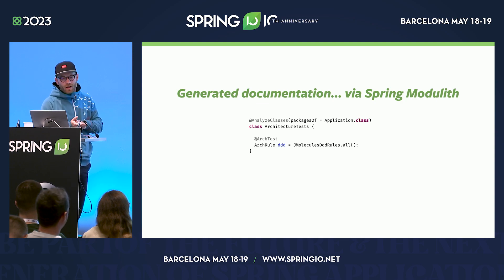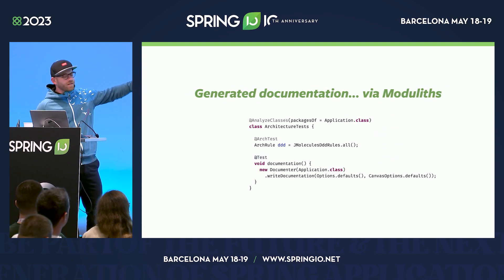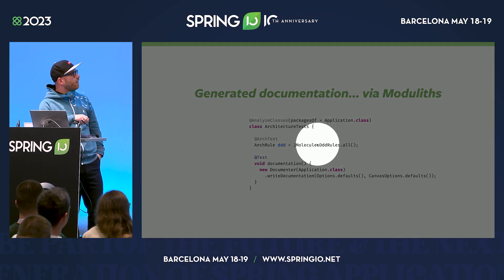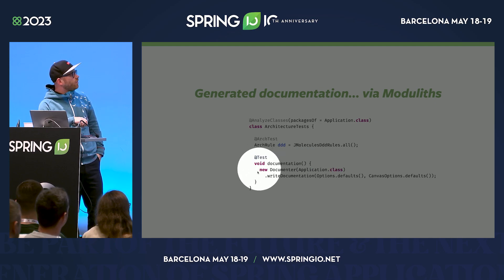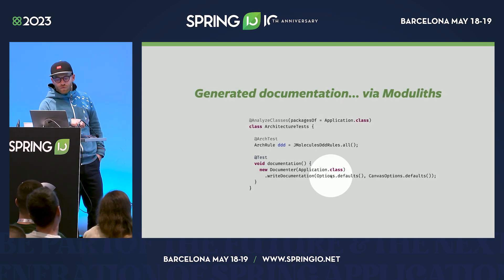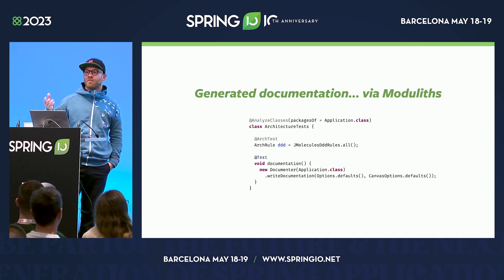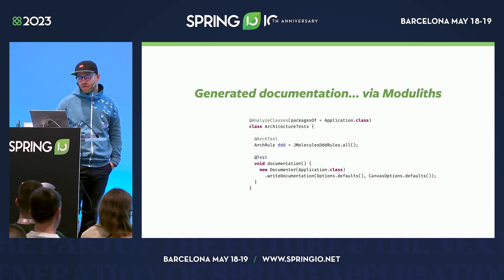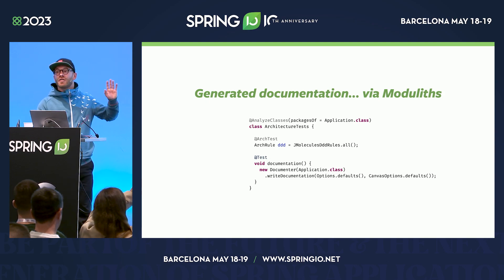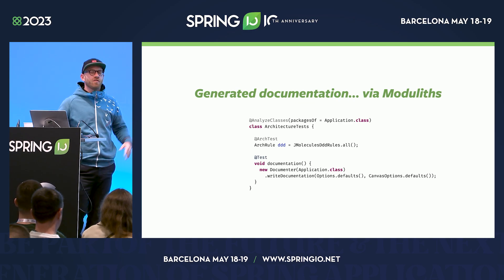The way you'd extend this: you can write a test case that takes your application class and uses the ModuleDocumenter API. You pipe in two options instances — one for UML or C4 model diagrams generated from the module structure, and the other, canvas options, for the application module canvas you've just seen. It's basically tweaks and options for what to include or not.